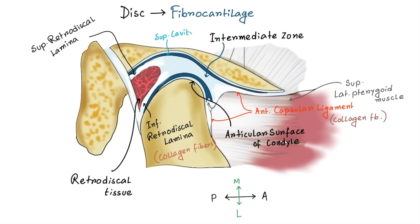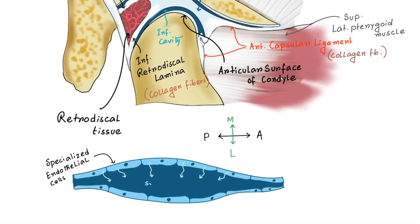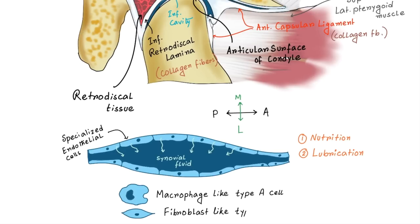This divides the joint into two distinct cavities: the upper or superior cavity and the lower or inferior cavity. The superior cavity is bordered by the mandibular fossa and the superior surface of the disc, and the inferior cavity is bordered by the mandibular condyle and the inferior surface of the disc. The internal surfaces of the cavities are surrounded by specialized endothelial cells which produce synovial fluid that fills both joint cavities. It has mainly two functions: it provides nutrition, and it acts as a lubricant reducing friction during articular movement. The synovial membrane consists of macrophage-like type A cells and fibroblast-like type B cells, identical to those in other joints.